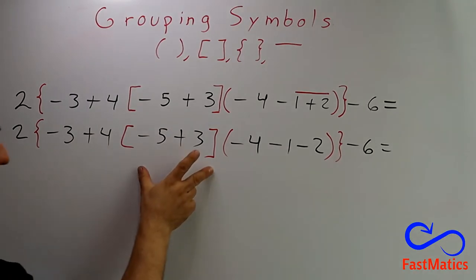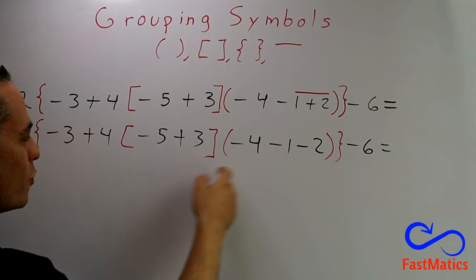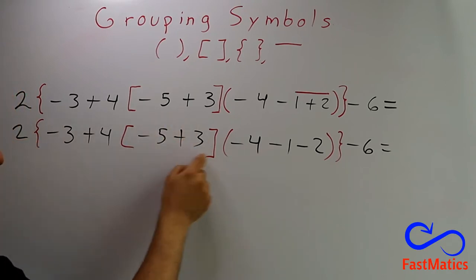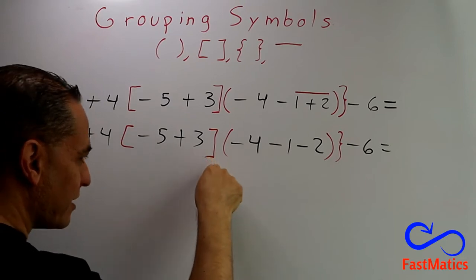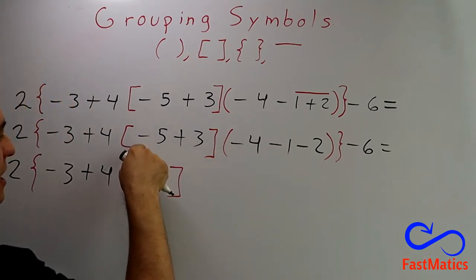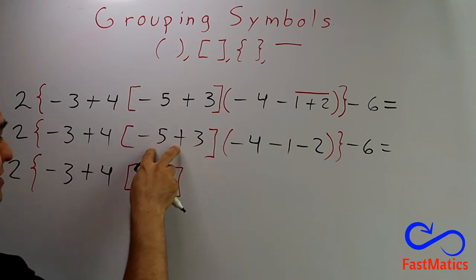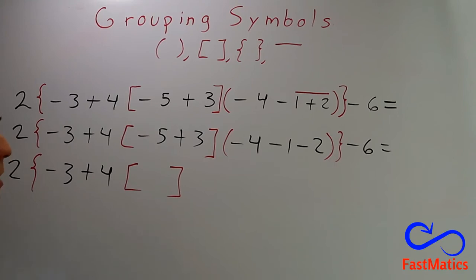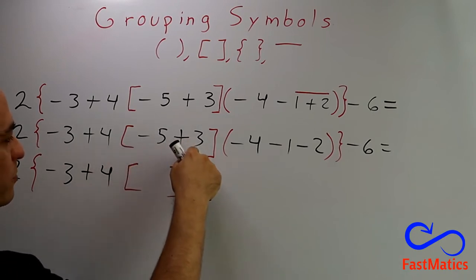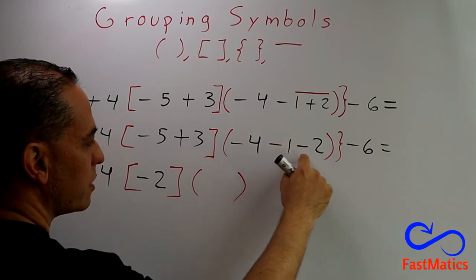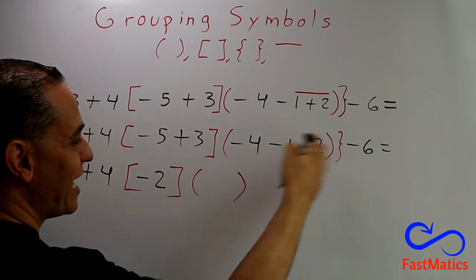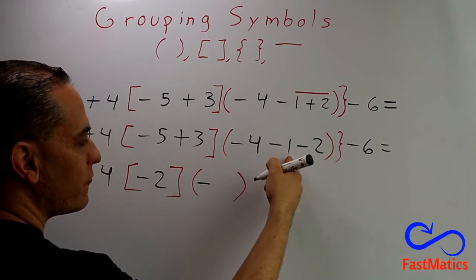After that, we see that the brackets and the parentheses are inside the braces. So, we are going to solve the operations that are inside brackets and parentheses, and after that, we are going to eliminate brackets and parentheses. We solve negative 5 plus 3. We have different signs. Remember the video where we talked about the signs rules. If we have different signs, we subtract and we keep the sign of the biggest number. Minus 5 plus 3 is minus 2. After that, we solve minus 4, minus 1, minus 2. We have the same signs, so we add and keep the same sign. 4 plus 1, 5 plus 2, 7.